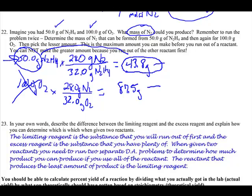So it doesn't matter how much of this. This is an excess. It doesn't matter how much of that you have. What we're concerned with here is running out of N2H4. This is our problem right here. That's our big problem. So this is our limiting reagent, because we run out of that one first.